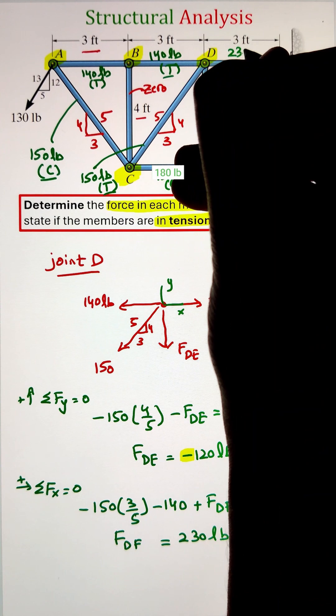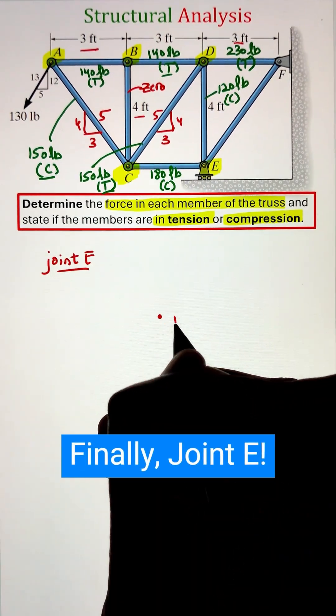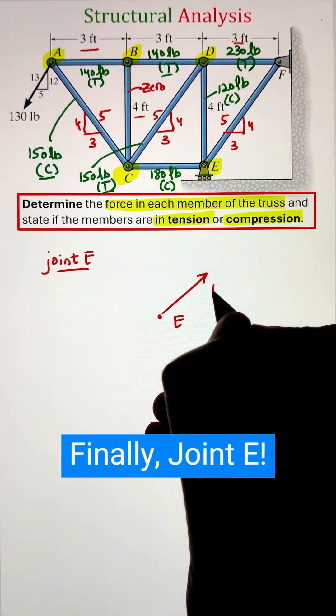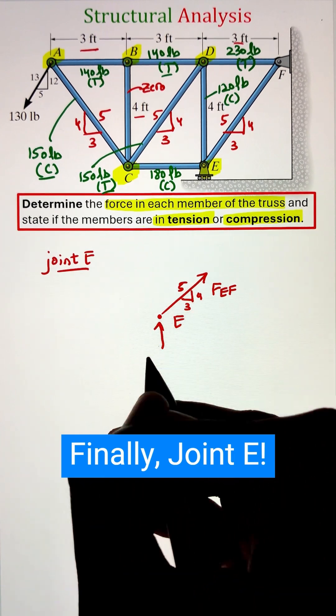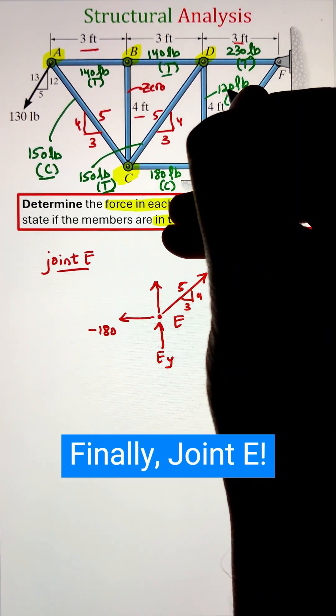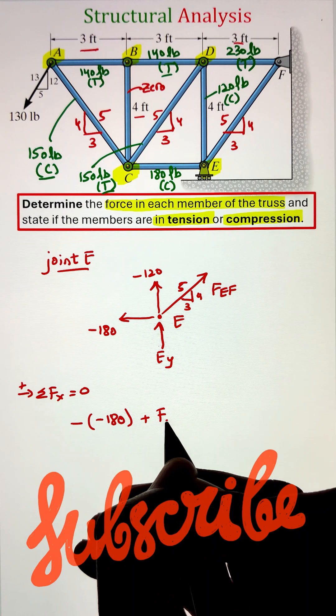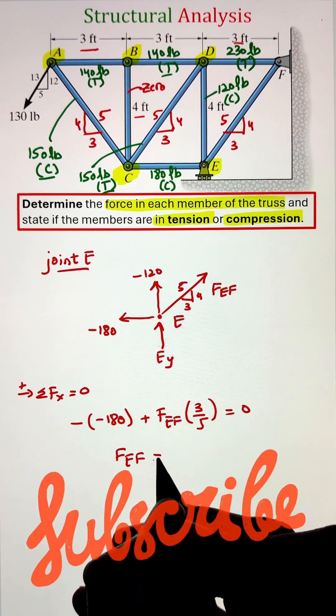Finally, let's move to joint E and draw the free body diagram. Applying the equilibrium condition along the x direction, we get our final member load as negative 300 pounds. Again, the negative sign is indicating that the member EF is in compression.